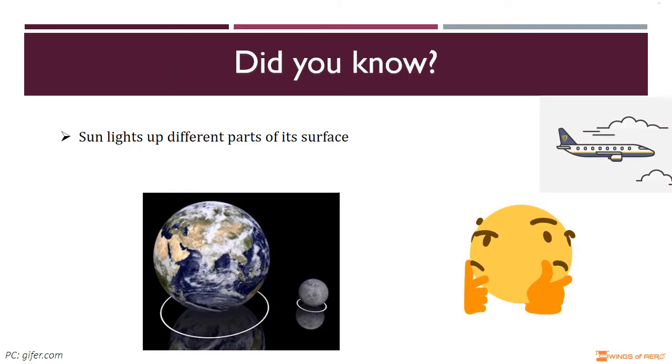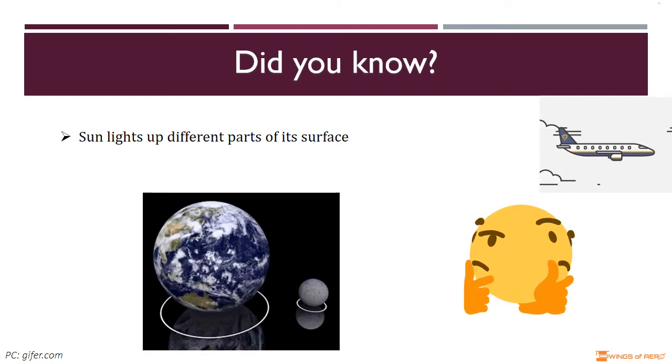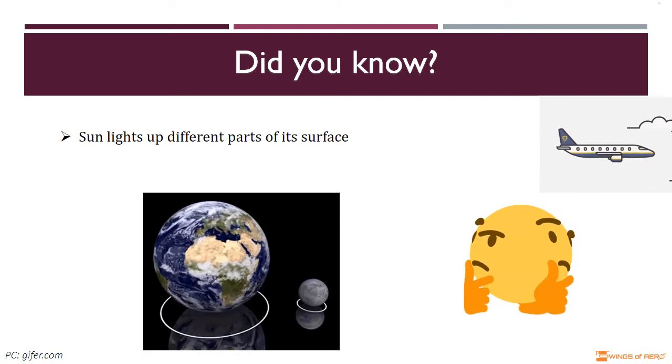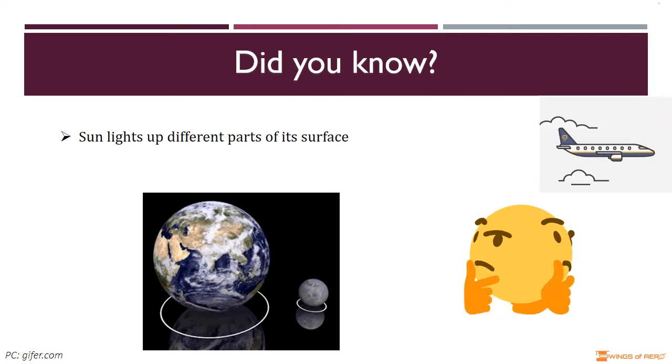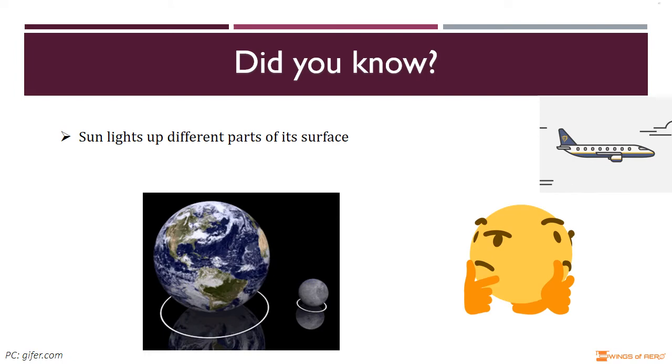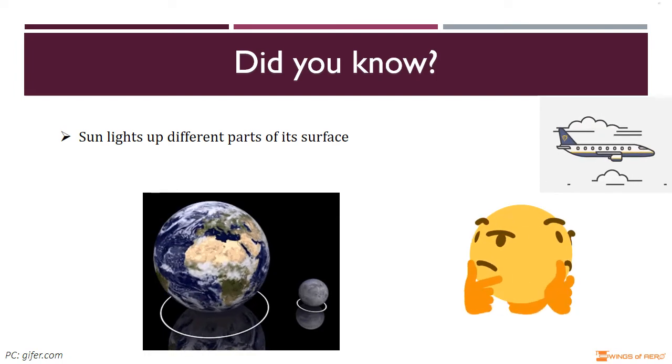Did you know, ever noticed how the moon appears to change shape each night? That's because as the moon orbits the earth, the sun lights up different parts of its surface. So it's just a view of the moon that's changing, not the moon itself.